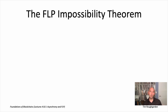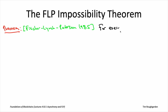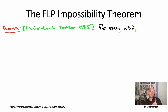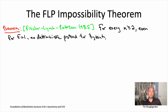The FLP here stands for the three researchers who proved it: Fisher, Lynch, and Patterson. The theorem states that no matter how many nodes N you have, even if you have just one Byzantine node — that is, even if the parameter f is equal to one — no deterministic protocol for the Byzantine agreement problem satisfies the three goals that we want.